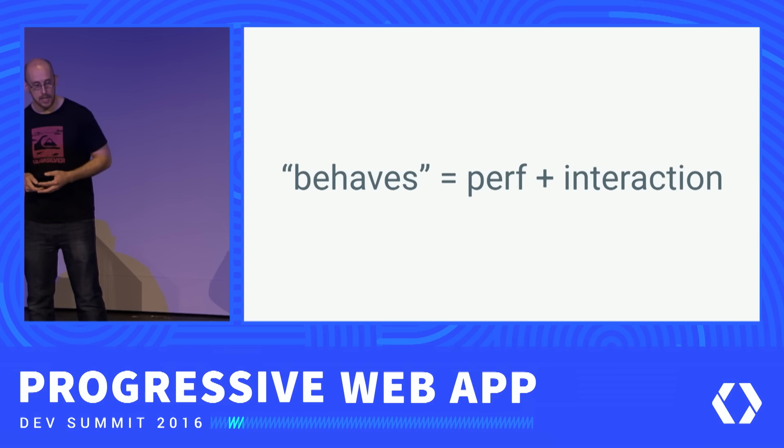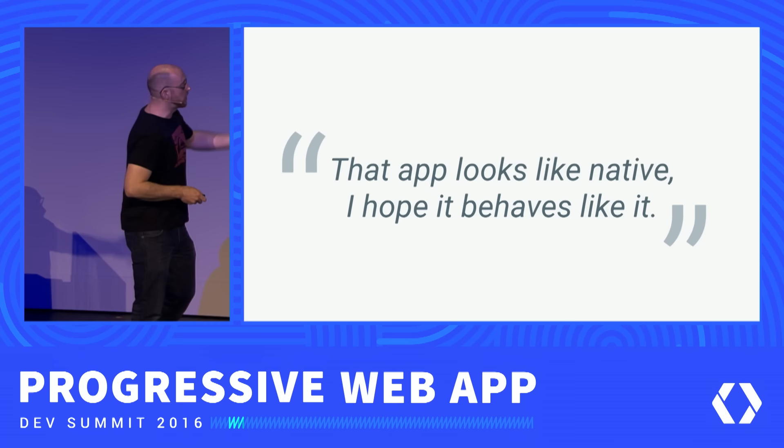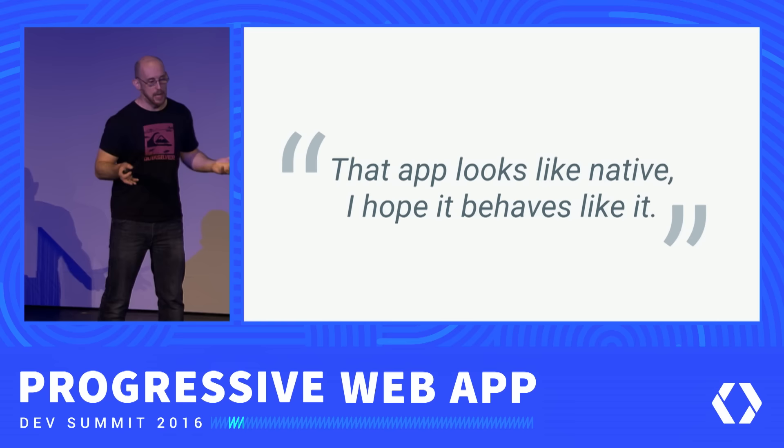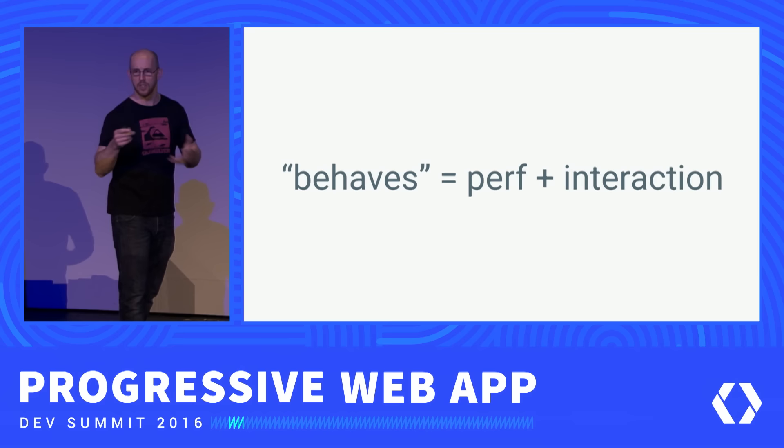Nobody's ever going to say, "Oh, it skipped things." What they would say is, "That app looks like native. I hope it behaves like it." They expect it to behave like a native app — they expect your stuff to run well. When I say "behaves," for me that is like performance: does it behave as we expect? Does it do the right things when I interact with it?